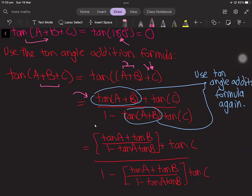But now the interesting thing is we can apply the tan angle addition formula again. So if you look at tan(A + B) here, we can apply it again and break it up into tan(A) and tan(B), and we end up having tan(A) + tan(B) over 1 - tan(A)tan(B), and have the same thing in the denominator.